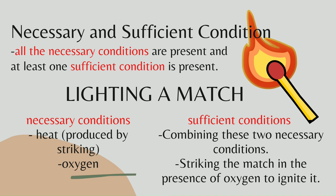Lastly, there is the combination of necessary and sufficient conditions, where all the necessary conditions are present and at least one sufficient condition is present. An example is lighting a match — in order to ignite a match, we have necessary conditions which are heat and oxygen, and the sufficient condition is combining these two by striking the match in the presence of oxygen to ignite it.